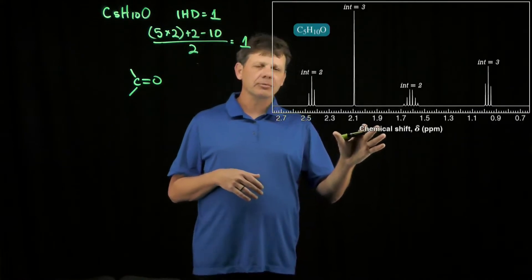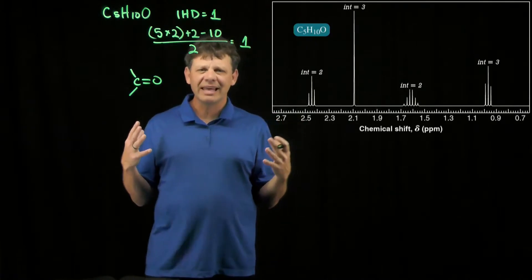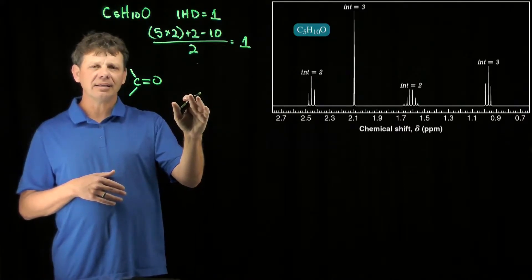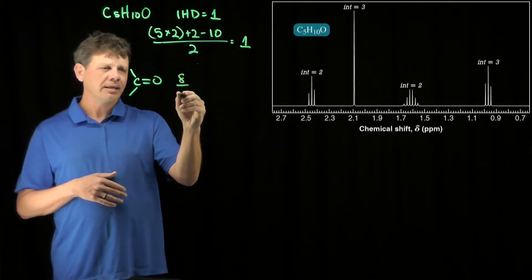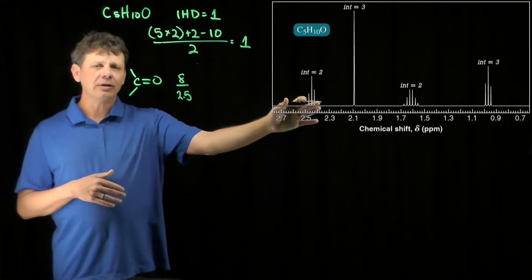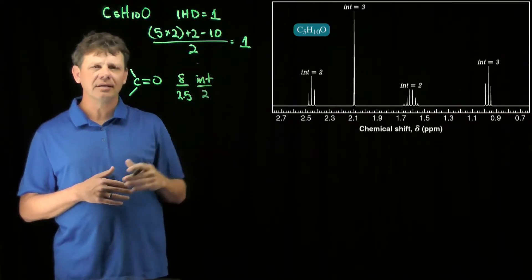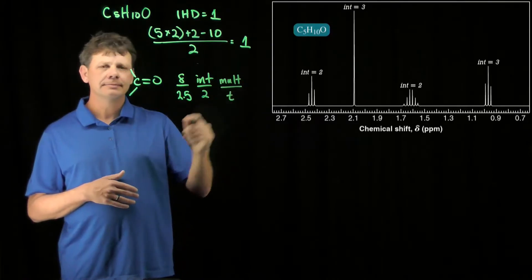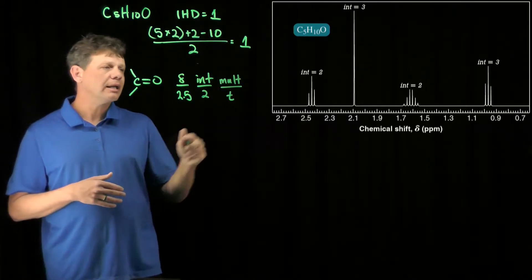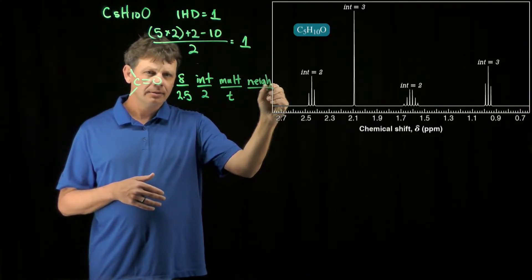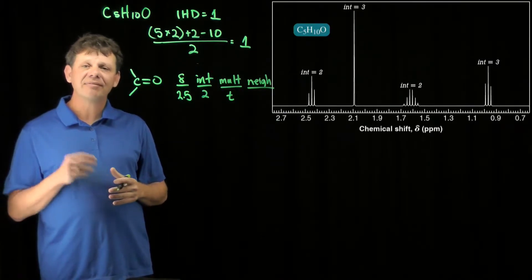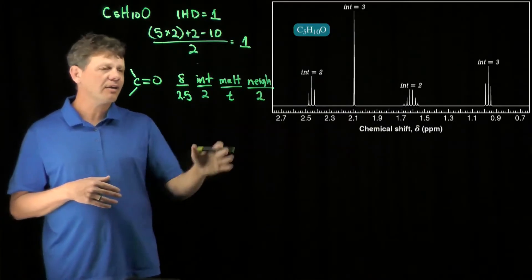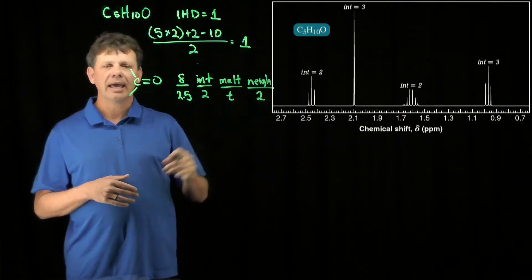The other thing that we do when we look at a spectrum like this is we treat each signal as a piece of the puzzle. Let's lay out what each signal is telling us. We'll start with the higher chemical shift values and work left to right. We'll identify our first signal at a chemical shift of around 2.5. It integrates to 2. It has a multiplicity of being a triplet. Therefore, we know that it's going to have a certain number of neighbors. If it's a triplet, we take the three lines minus 1, that means there are two neighbors.